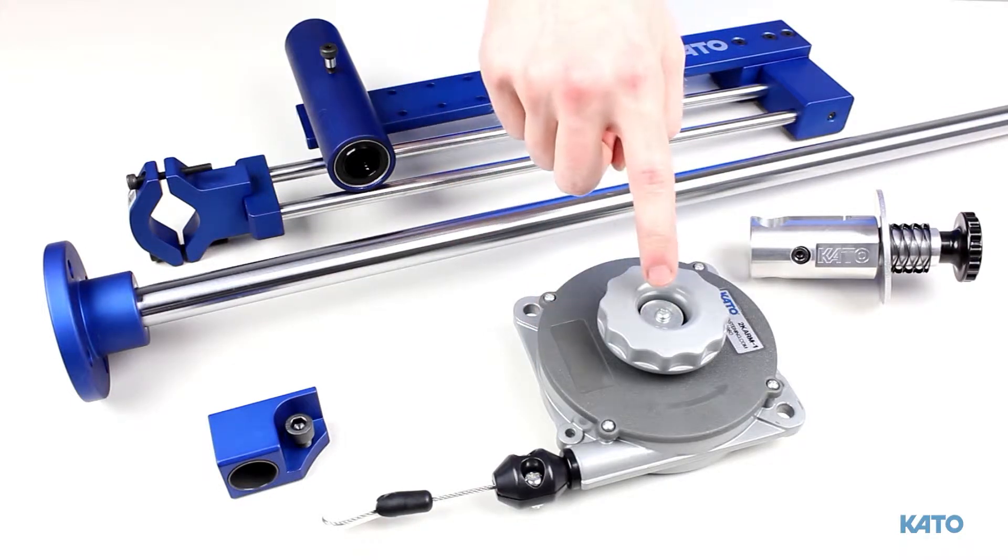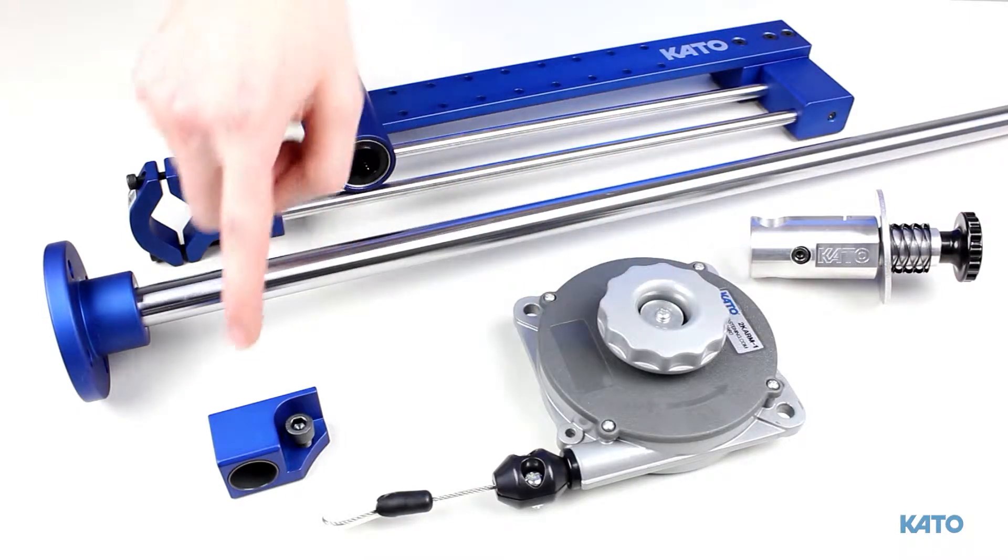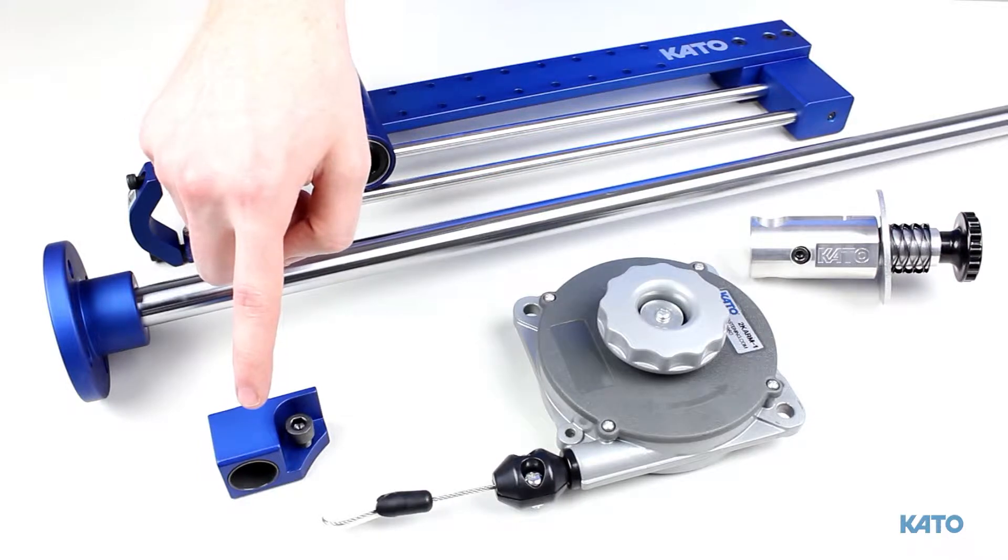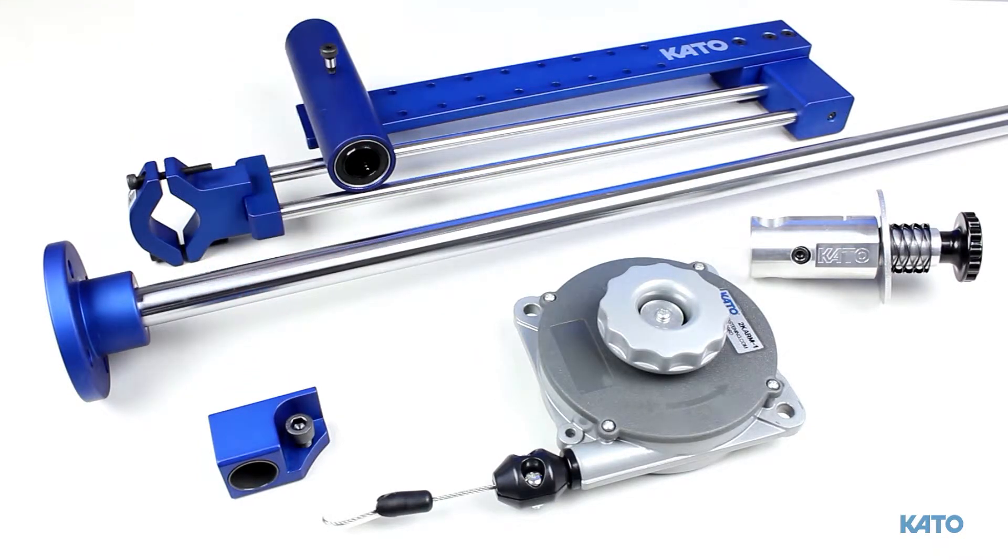This is the balancer and the knob that controls the tension. This is the balancer bracket. It connects to the balancer and sits on top of the vertical post.